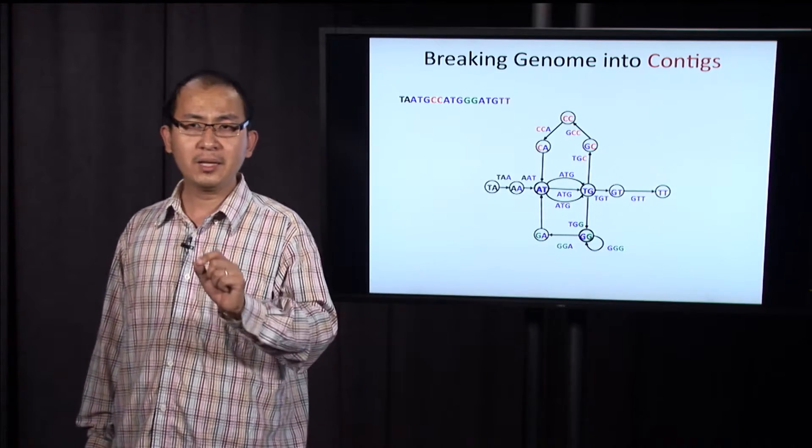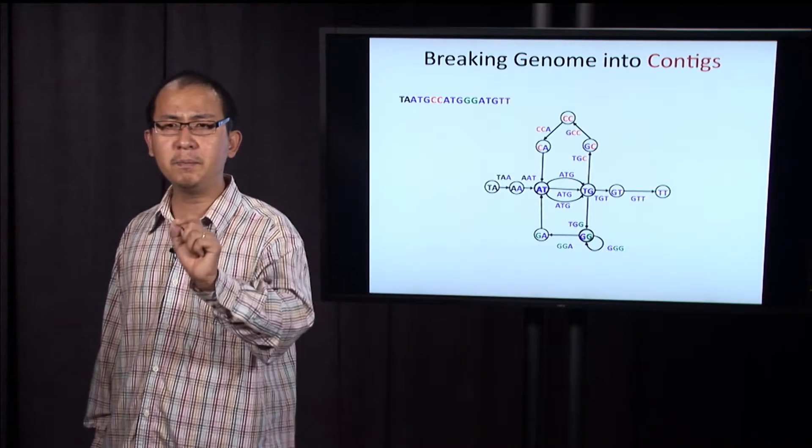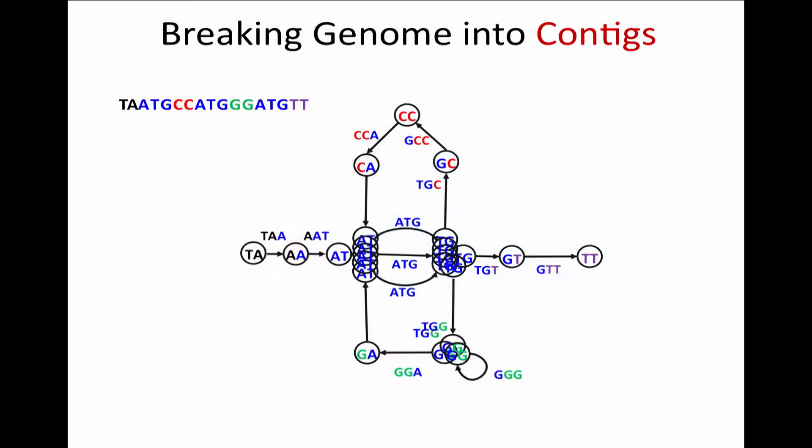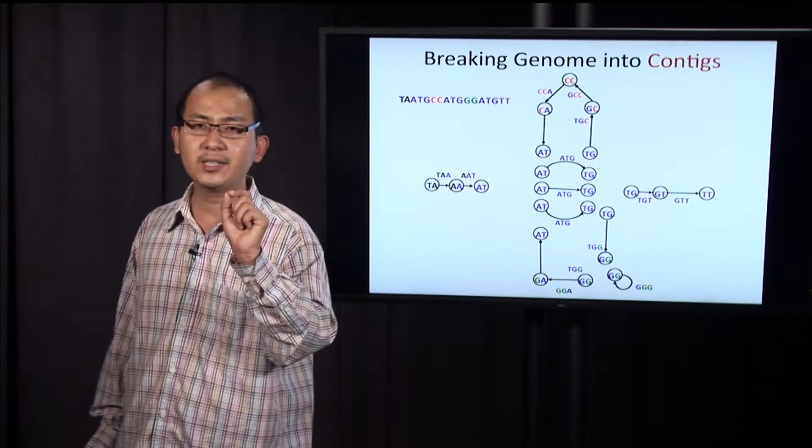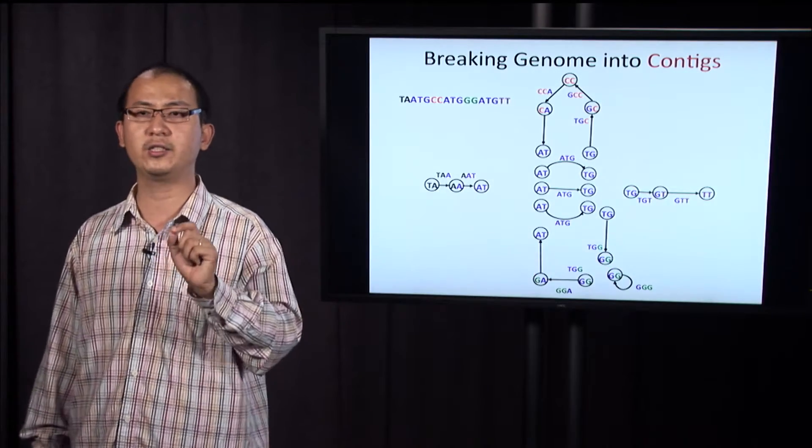Well, this ambiguity forced us to decompose the de Bruijn graph into multiple disconnected components. Each component corresponds to a non-branching path in the de Bruijn graph. Please note that while there are multiple Eulerian paths in the de Bruijn graph, all of them share the same set of non-branching paths shown here.